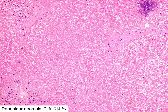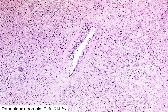Panacinar necrosis is featured by necrosis of the entire acinus or lobule of hepatic parenchyma. Related terms include multiacinar or multilobular necrosis, submassive necrosis, and massive necrosis. Multiacinar necrosis refers to the necrosis of multiple adjacent acini. Massive hepatic necrosis describes the necrosis of more than 70% of the entire liver, whilst submassive hepatic necrosis refers to necrosis affecting 30% to 70% of the liver. The differential diagnosis of panacinar necrosis depends on the amount of any associated inflammatory infiltrate.